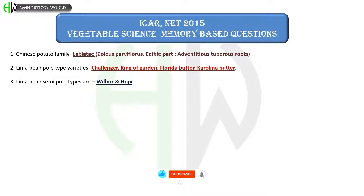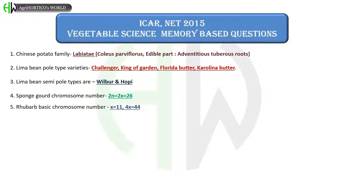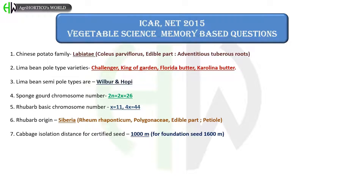Lima bean semi-pole types are Wilbur and Hoopie. Sponge gourd chromosome number is 2n = 2x = 26. Rhubarb basic chromosome number is x = 11, 4x = 44. Rhubarb origin is Siberia, and Rhubarb scientific name is Rheum rhaponticum, family Polygonaceae, and its edible part is petiole.